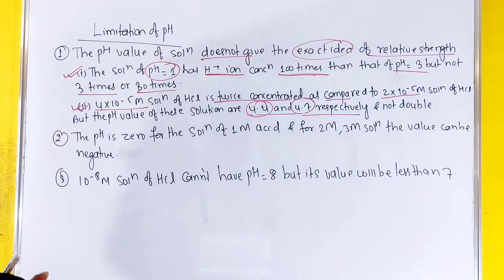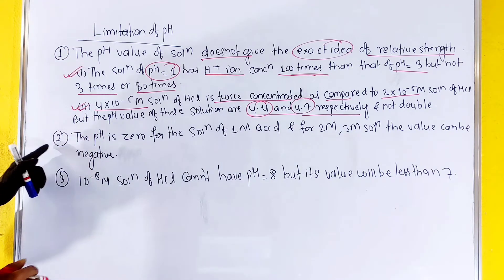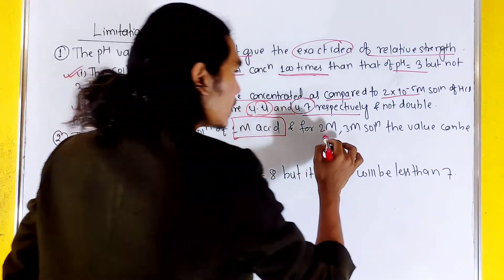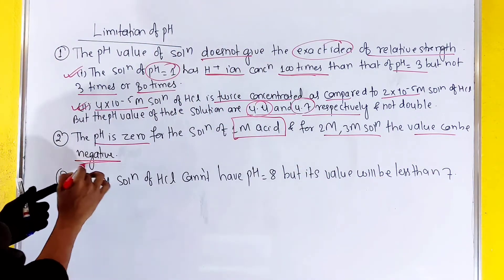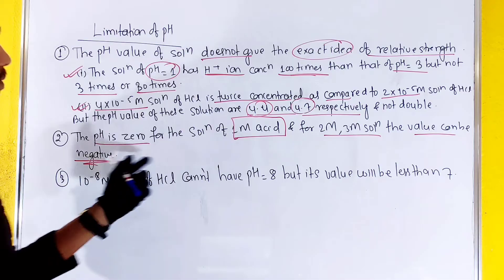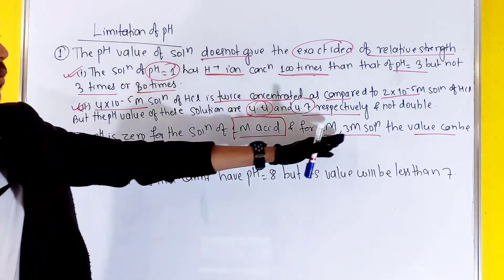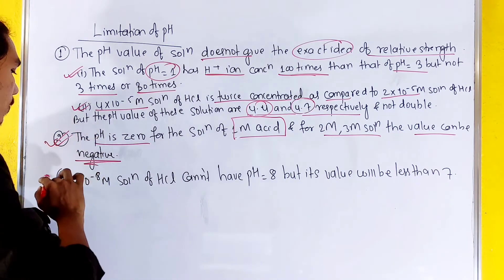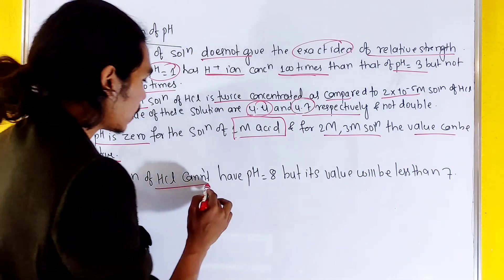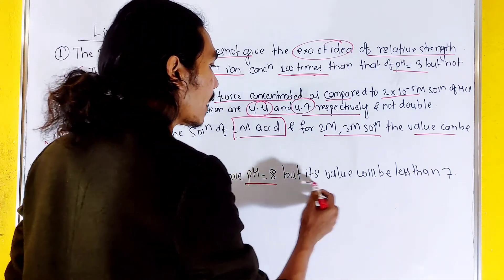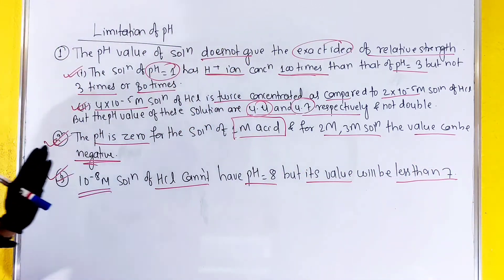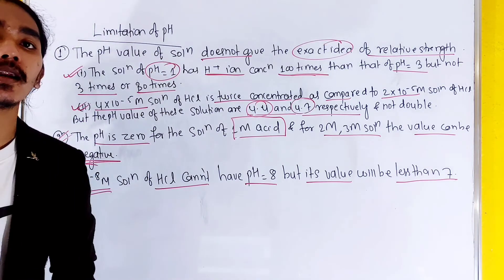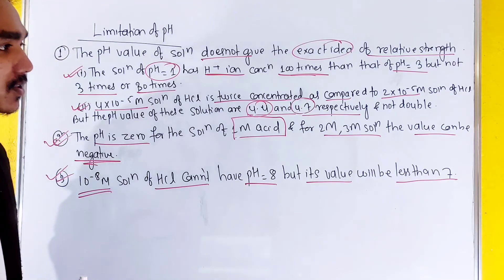So this is a limitation — a drawback. The pH is zero for a solution of 1 M acid. For 2 M or 3 M solutions the pH value can be negative. Also, a 10^-8 M solution of HCl cannot have pH 8; its value will be less than 7. These are the limitations of the pH scale.